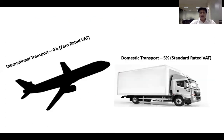To wrap up the key distinction: international transport is zero percent, and domestic transport is five percent. A recap: the flight is not the only means of international transport — a ship and even road transport can also qualify as international transport.